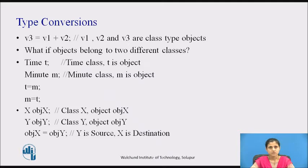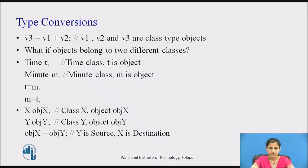Let's see one more example: object x = object y, where object x is an object of class X and object y is an object of class Y. These are objects of different types. The class Y type data is converted to class X type data and the converted value is assigned to object x. Since the conversion takes place from class Y to class X, Y is known as the source class and X is known as the destination class. Such conversions between objects of different classes can be carried out by either a constructor or a conversion function. It depends upon where we want the conversion function to be located — in the source class or in the destination class.